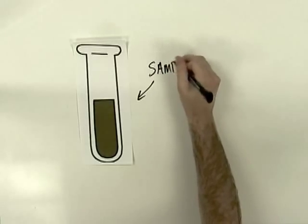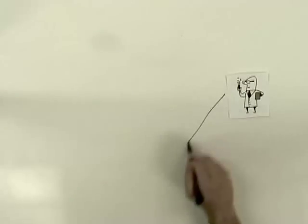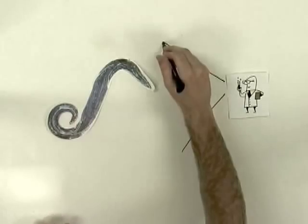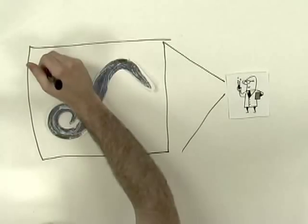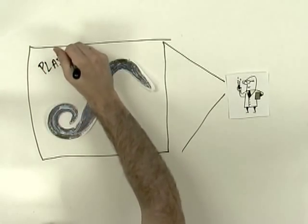Scientists are collecting fecal samples from apes in the forests of Africa. In these fecal samples, they are looking for a parasite called Plasmodium, the same parasite that causes malaria in humans.